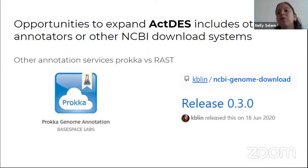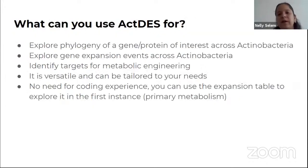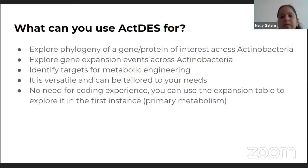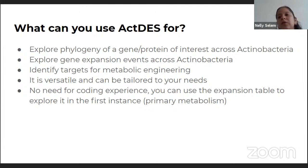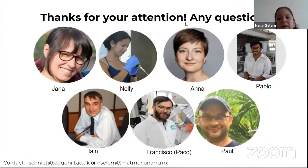There are so many more tools now than when Jana and I started our PhDs, but we hope that you find ACDES useful. What we find ACDES useful for: exploring the phylogeny of a gene or protein in actinobacteria, exploring gene expansion events across actinobacteria, identifying targets for metabolic engineering. We also value that it is very versatile — you can tailor it to whatever your needs are. Finally, there is no need for coding experience because you can use the Jupyter notebook and run every instruction there, or you can just go to Zenodo and download the data and the outputs, and look for the enzyme you are interested in across some of the actinobacterial lineages.